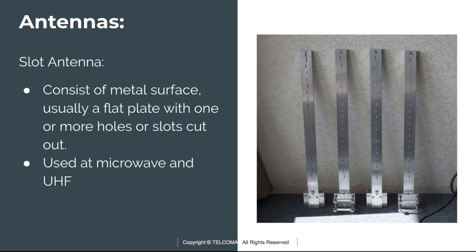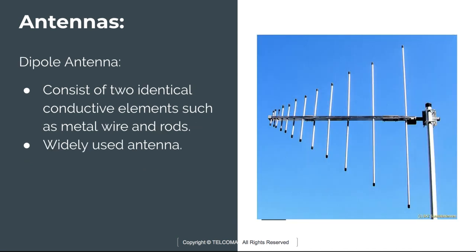The dipole antenna, also known as a doublet, is widely used for communication purposes. It consists of two identical conductive elements such as metal wires or rods. A common example is the rabbit-ears television antenna. The current and associated voltage cause EM waves to radiate. Types of dipole antennas include the short dipole, half-wave dipole, quarter-wave monopole, and folded dipole. Dipole antennas are widely used for communication and TV broadcasting.